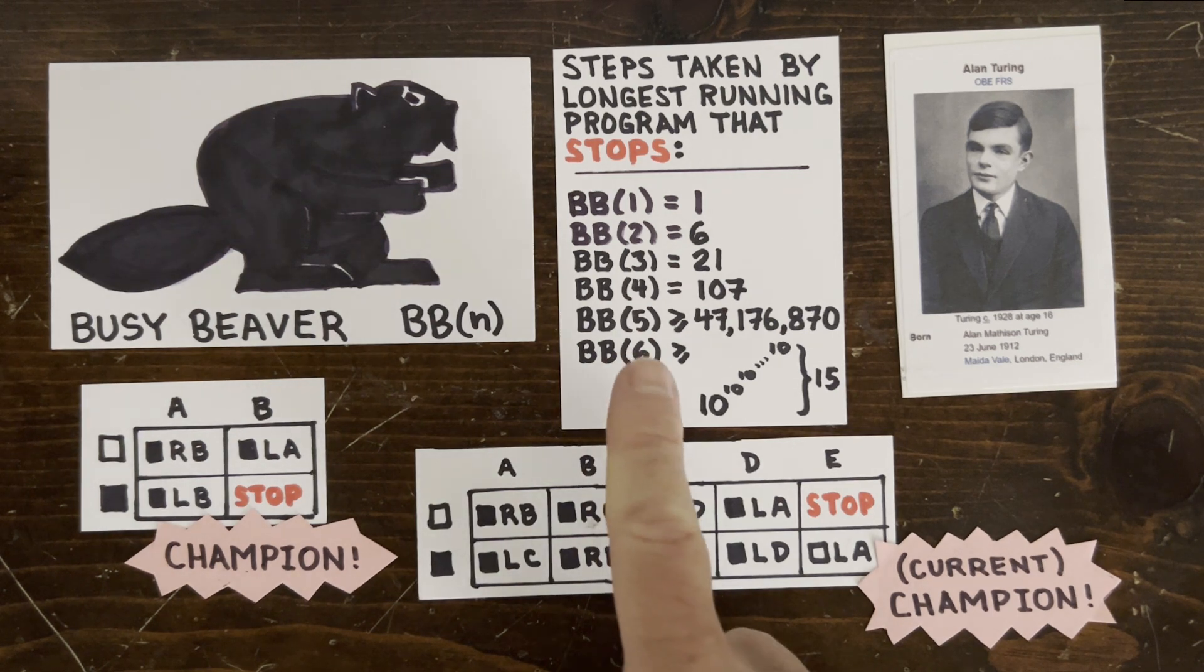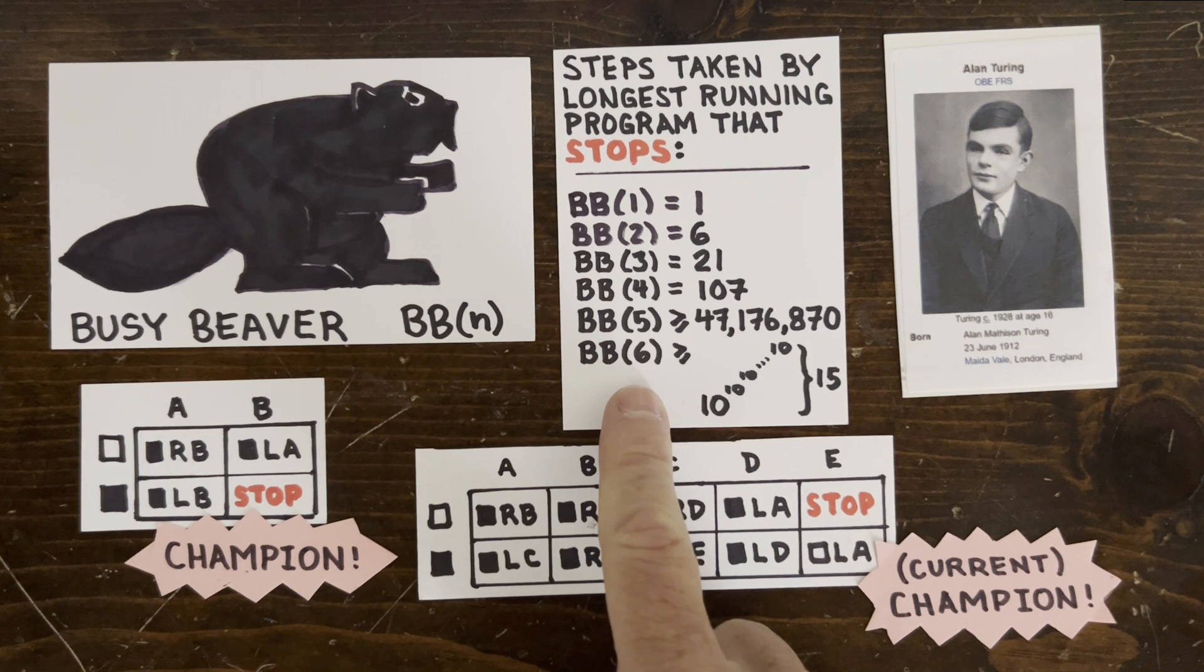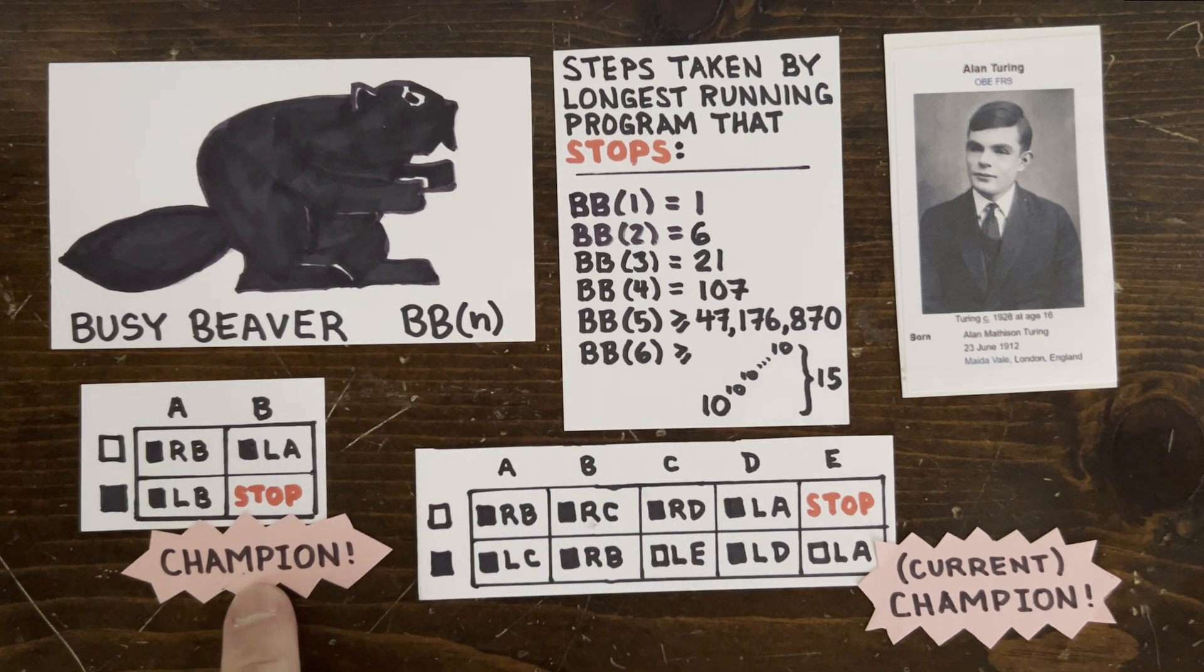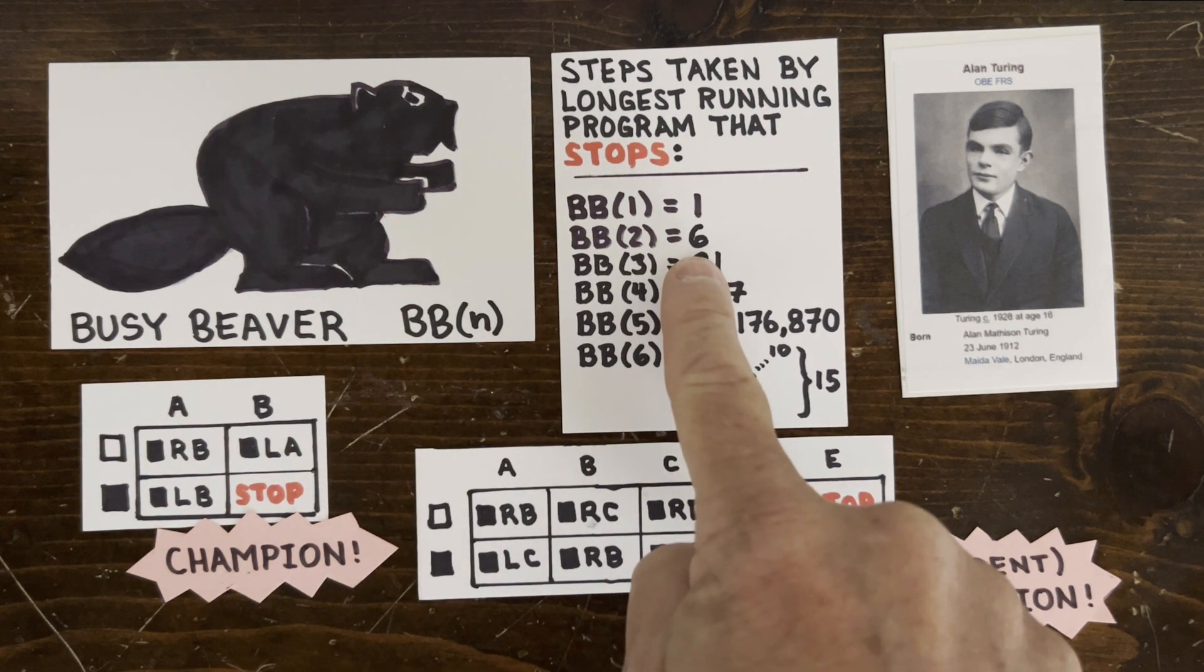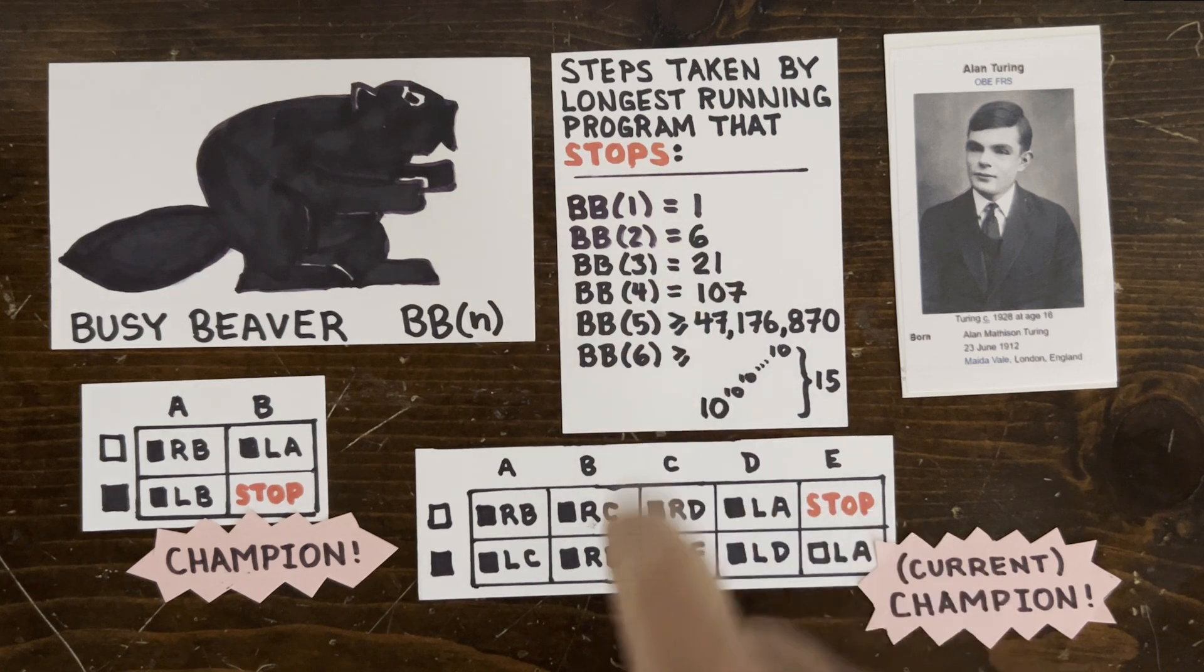The busy beaver function BB(N) records the number of steps taken by the slowest Turing machine with N states. This here is the slowest two-state machine. It takes six steps before stopping, and no other two-state machine runs longer than that, so BB(2) is six.